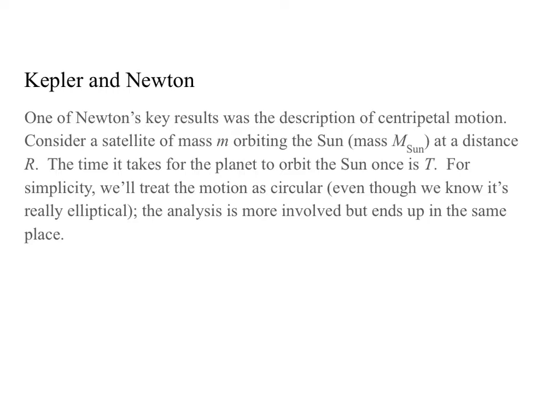One of Newton's key results was the description of centripetal motion. Consider a satellite of mass m orbiting the sun, whose mass is M_sun, at a distance r. And the time it takes the planet to orbit the sun once is capital T. For simplicity, we're going to treat the motion as circular, even though we know it's really elliptical. The analysis is more involved but ends up in the same place when you include ellipses.